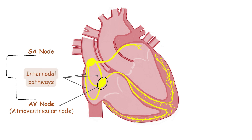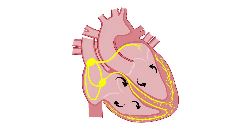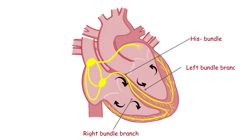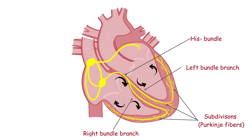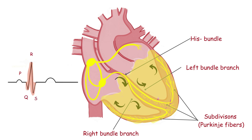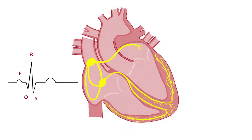The electrical stimulus generated at the SA node travels down through the internodal pathways to reach the AV node. After the AV node comes the ventricular conduction system, originating at the His bundle, then immediately bifurcating into the right and left bundle branches and dividing into tiny subdivisions. This stimulus is going to depolarize the ventricles and will provide the QRS complex on the ECG. The last thing we see on a regular pattern is the T wave, which represents the final phase of repolarization of the ventricles.